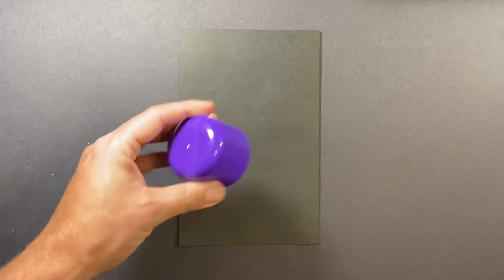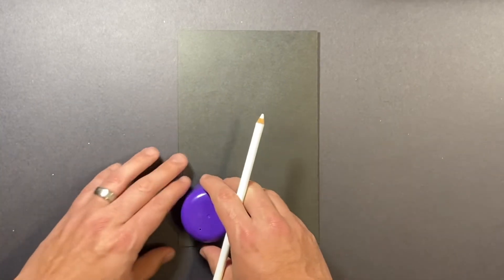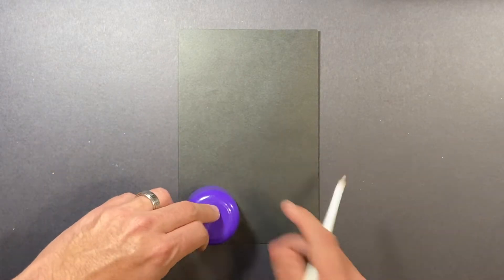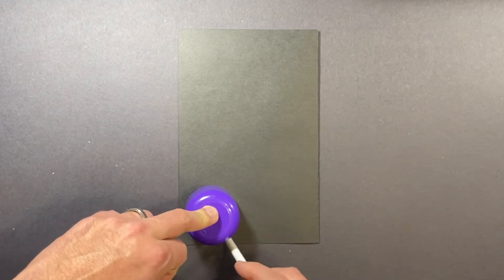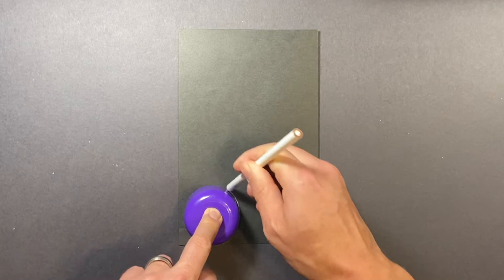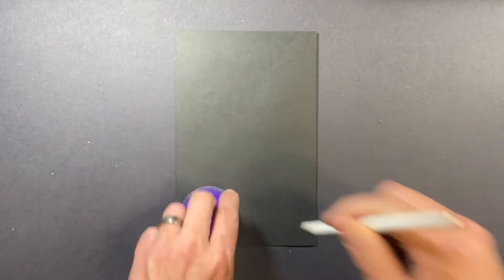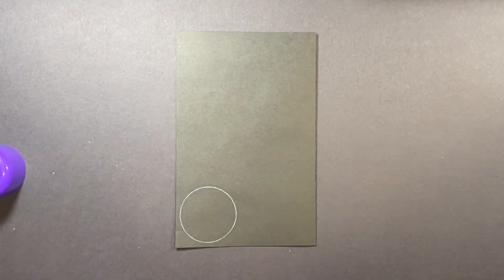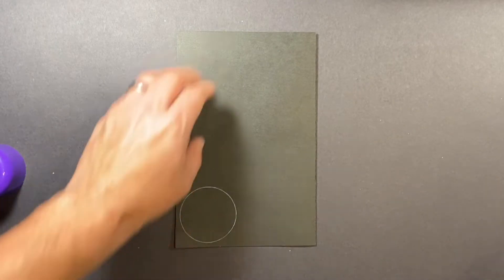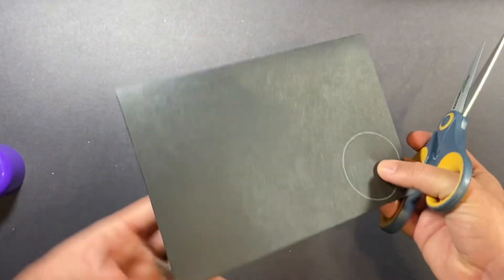What I want you to do now is grab your smallest circle tracer, the smallest one. And because I'm working on black paper, I'm going to use a white colored pencil to trace around it. If you're using white, just use a regular pencil, and then you can color it in with any color you want. I suggest a black crayon, a black marker.